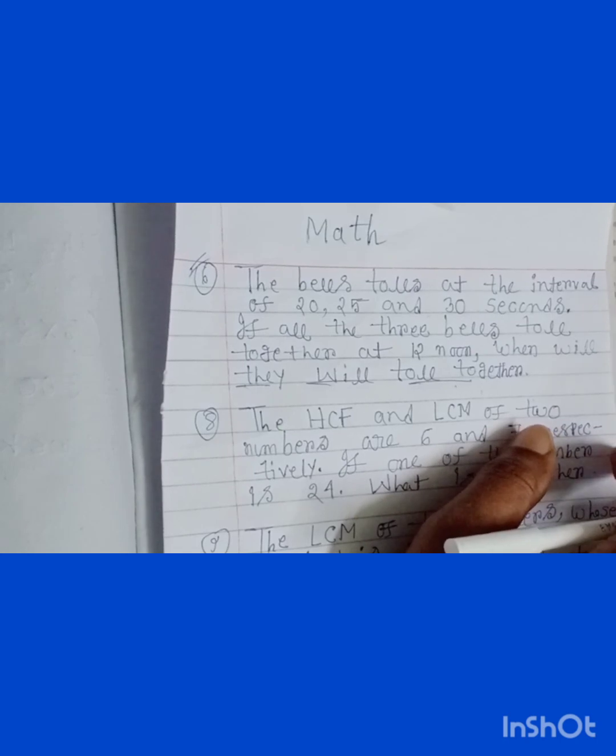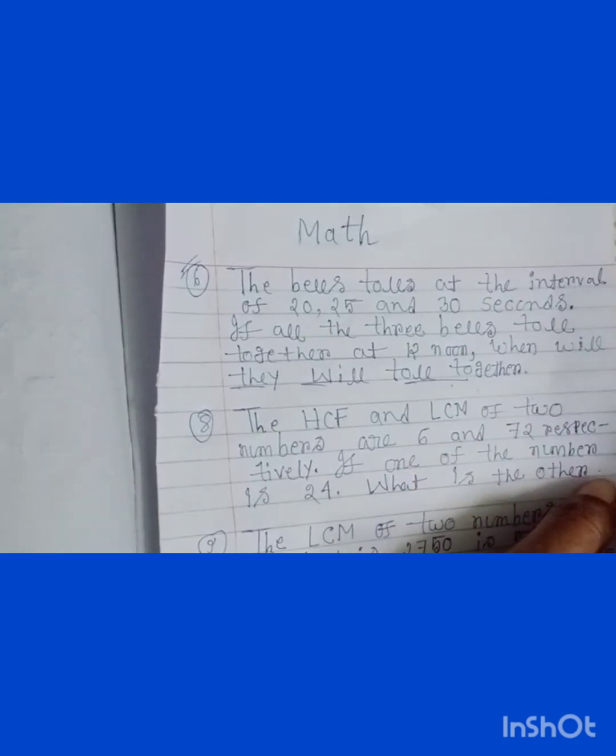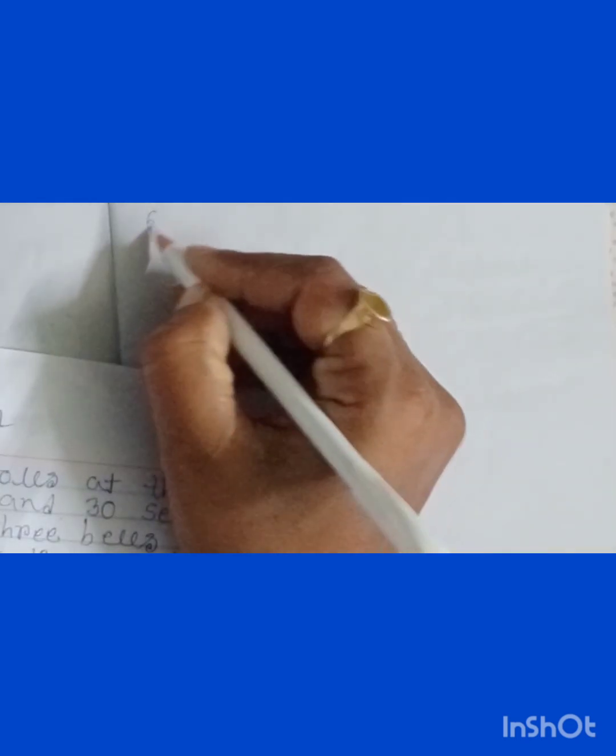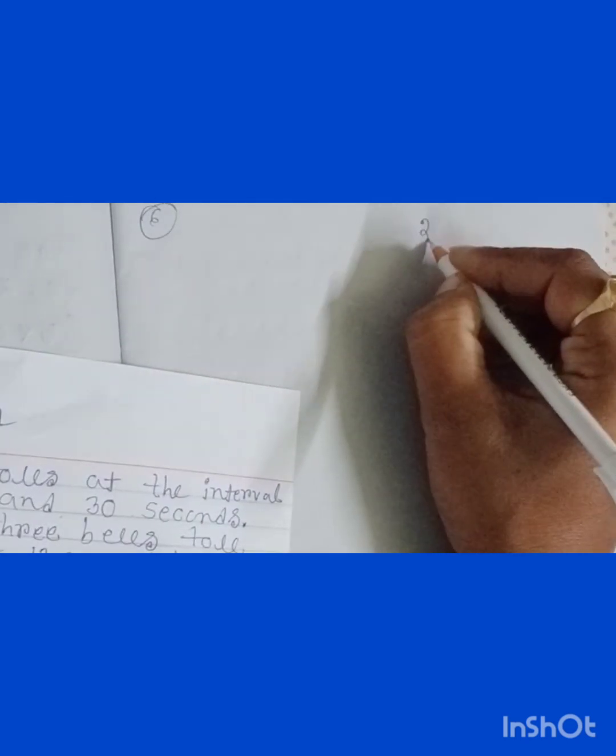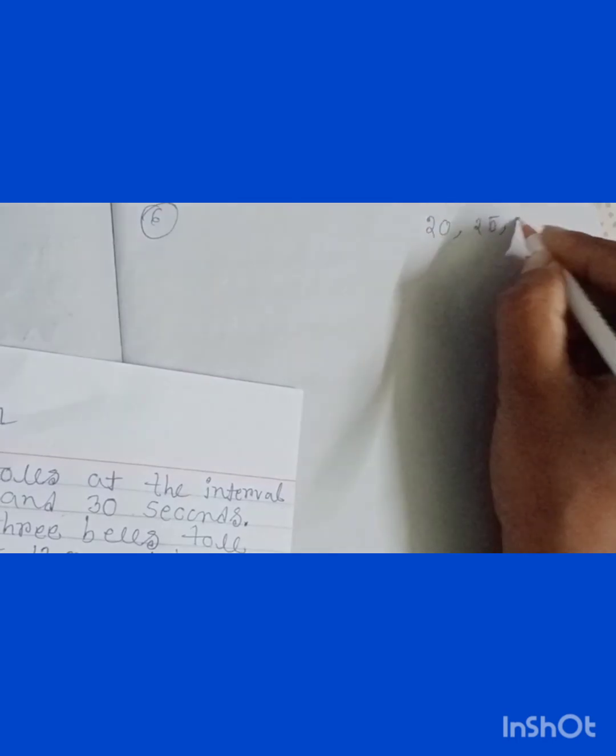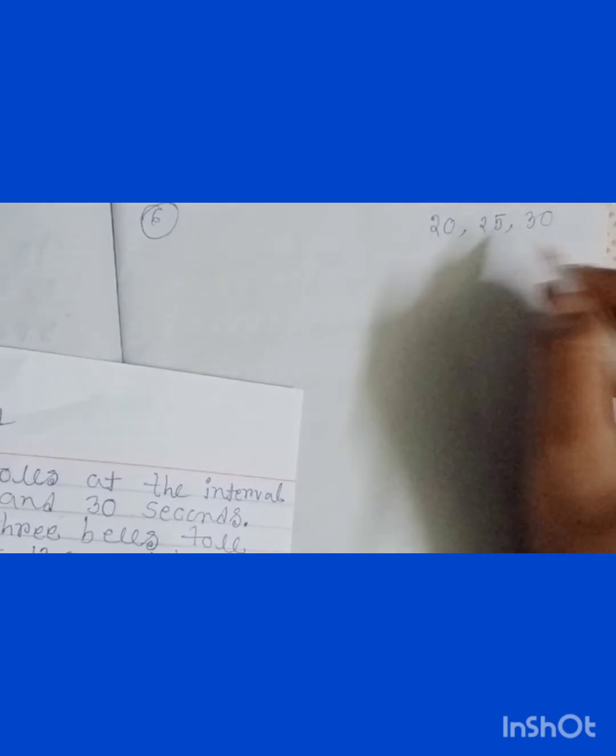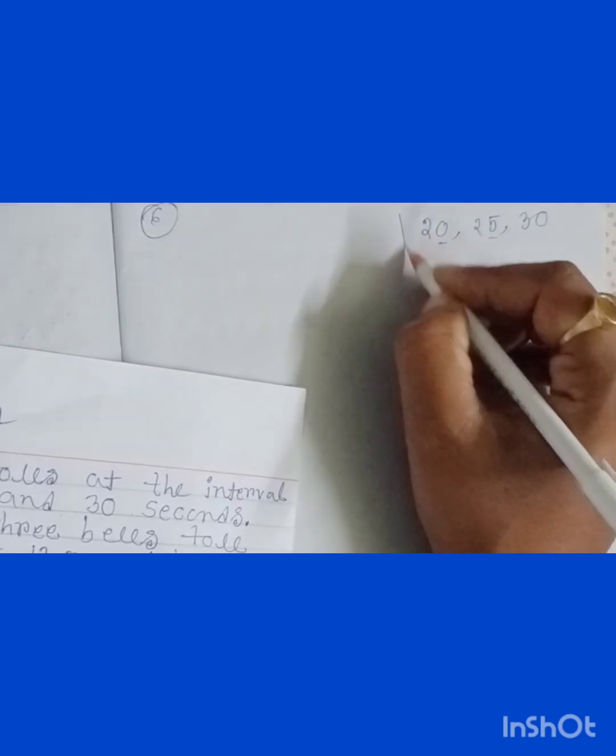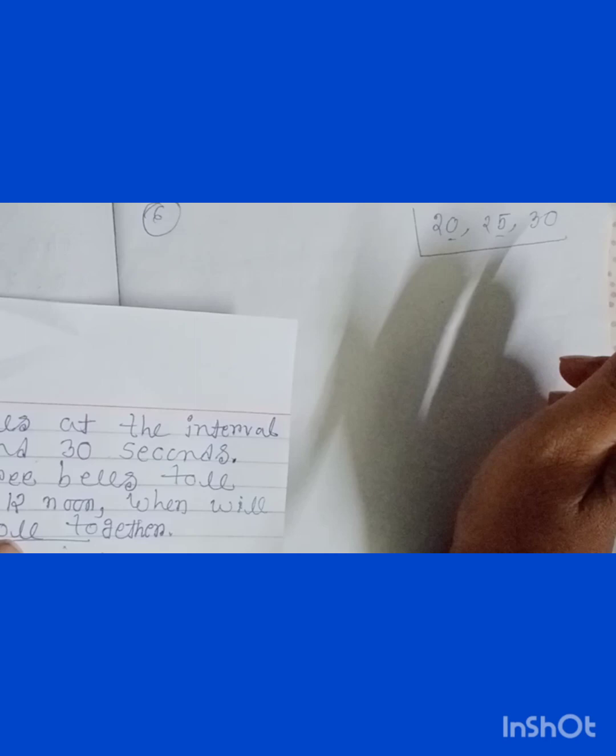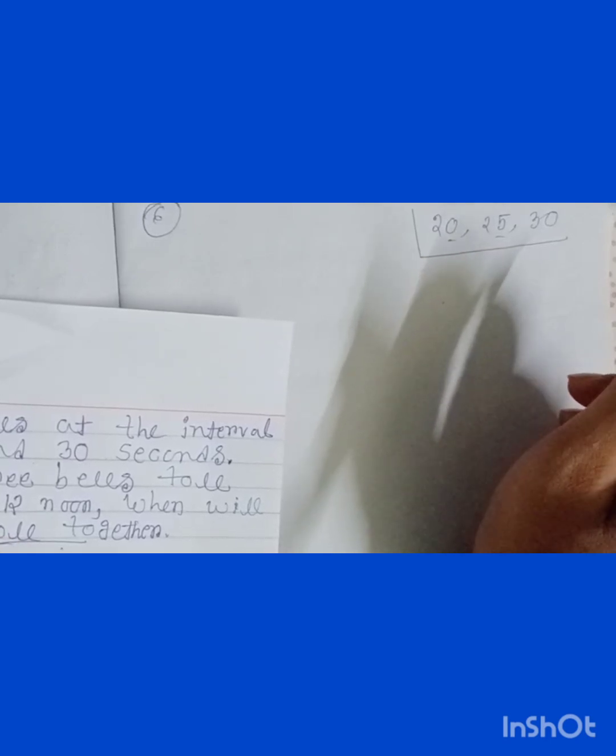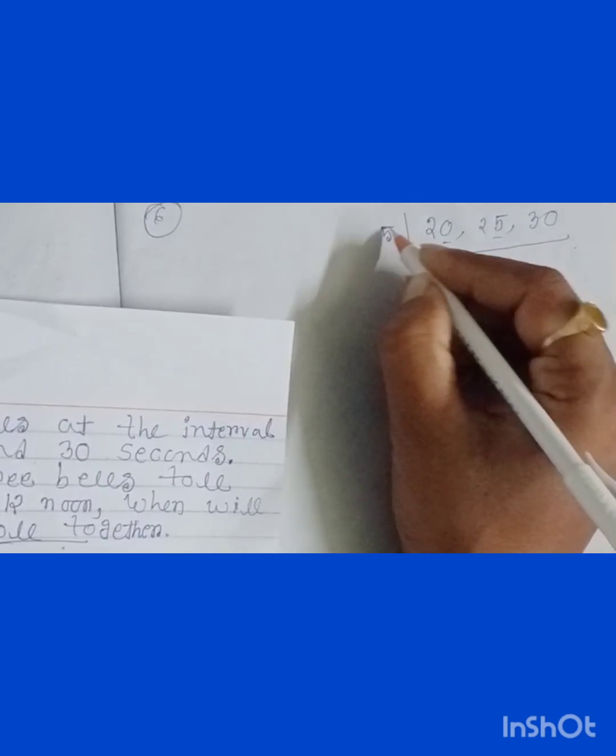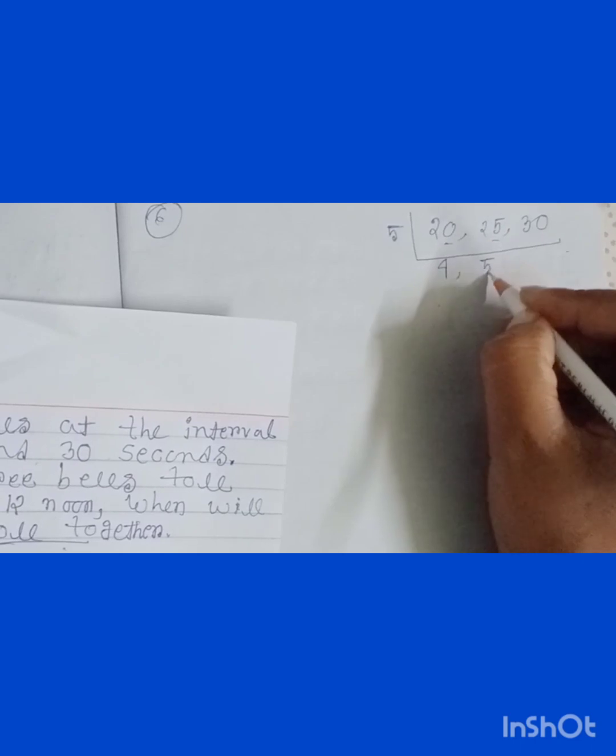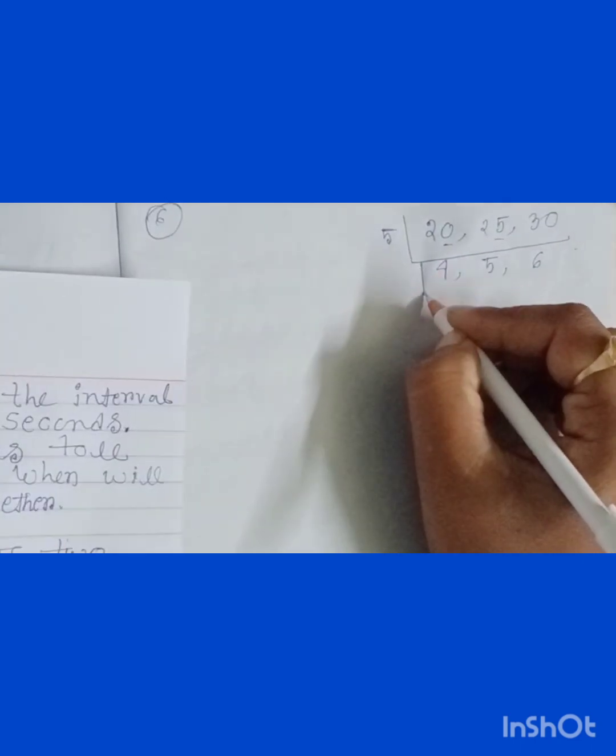So students, first of all you have to calculate the LCM of the given numbers: 20, 25, and 30. Here we can see the unit digits contain 0 and 5. As we know from the divisibility test, any number is divisible by 5 if its unit digit contains 0 or 5. So here we are taking 5 as a common factor. So 5 times 4 is 20, 5 times 5 is 25, and 5 times 6 is 30.